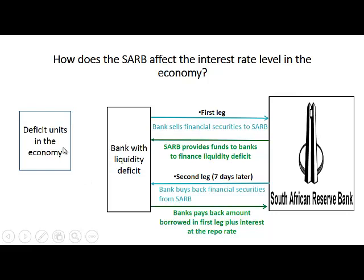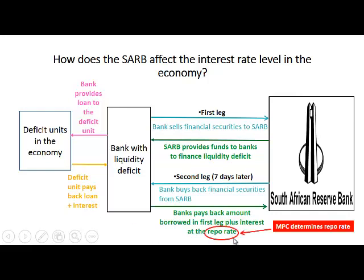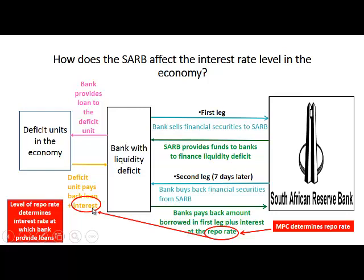The deficit units in the economy can borrow from the banks, so the bank provides a loan to the deficit unit and the deficit unit will pay back the loan plus interest. The repo rate at which banks borrow from the Reserve Bank is determined by the Monetary Policy Committee of the South African Reserve Bank. So we can say the South African Reserve Bank determines the repo rate, and this repo rate will affect the interest rate at which banks provide loans to their customers.